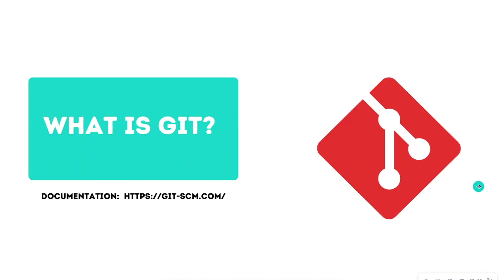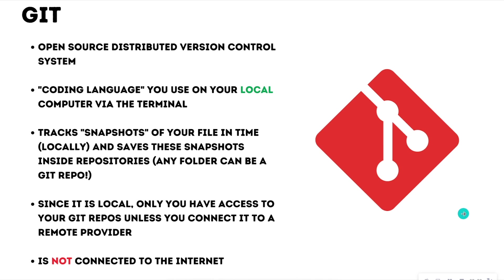This is exactly where Git comes into play. I'm going to be referring to some of the documentation of Git — it's very important to refer to the documentation in case you need help with something Git-related. Git is considered an open source distributed version control system that's going to help you do version control. You can think of it as a coding language where you're going to use your local computer via the terminal — Git Bash, PowerShell, or ZSH — and type in commands or prompts to utilize Git.